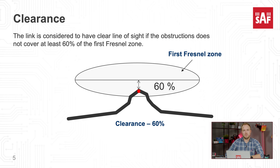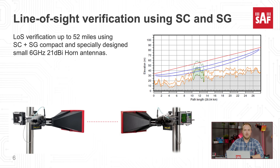Radial line of sight has to be verified using a transmitter and receiver. Other methods like using a flashlight on one side and an observer on the other might give false results, as that only represents verification of clear visual line of sight, but not the radial line of sight, including parts of the first Fresnel Zone which might be obstructed. Please follow this link to watch a colleague explain Fresnel Zone and radio wave propagation in detail. SAF Technica has created a line of sight verification kit, which allows verifying clear radio line of sight starting at 6 GHz and above for distances up to 83 km.